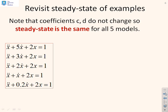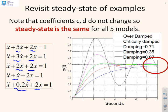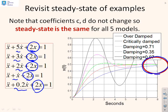Looking back at the previous video, which introduced the normalised form and the impact of damping: in those examples, the coefficient of x was kept the same throughout while the damping was changed. This produced very different response characteristics. However, they all settle to the same position — they all have the same steady state — because that coefficient of x was not changed. This re-emphasises that the steady state depends only on the coefficient of the x term and the magnitude of the input.